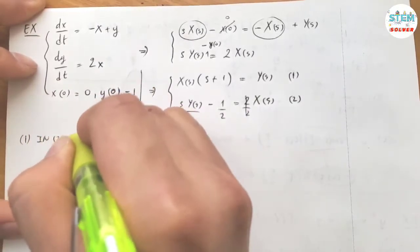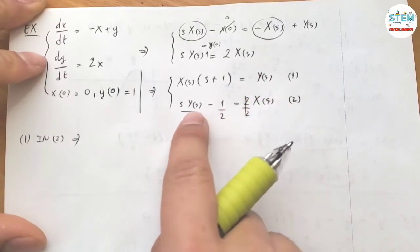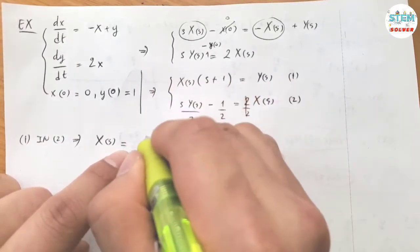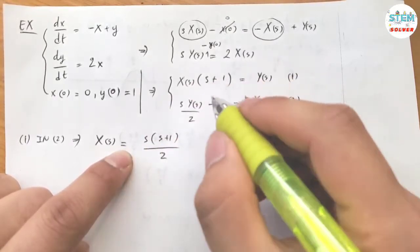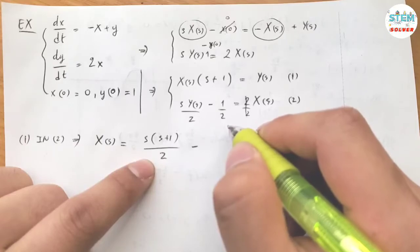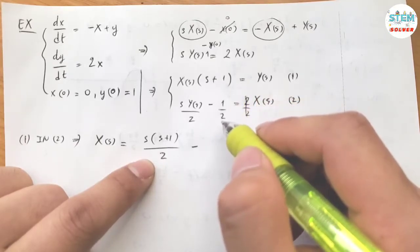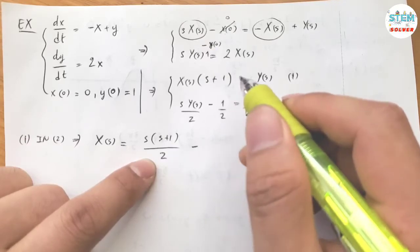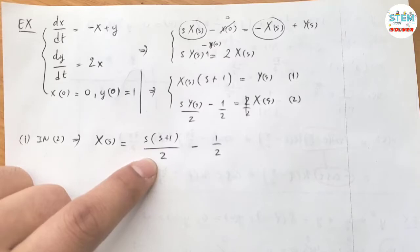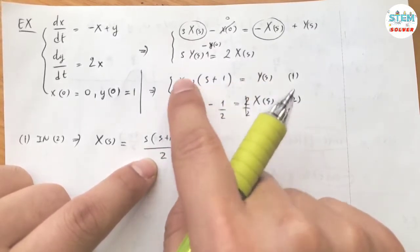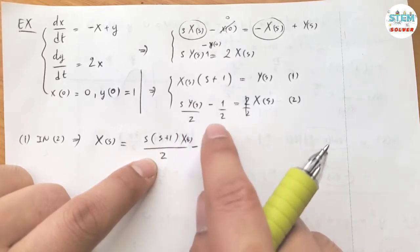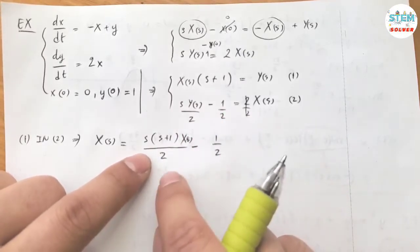So I have, let's see, plug in Y of S into here. So I have X of S equals, plug it into here. I have S times S plus 1 over 2 minus, let's see, minus 1 half. So plug in this into here, I forgot the capital X of S. So this time S Y of S over 2 minus 1 half here. So this is what I have when I plug 1 into 2.